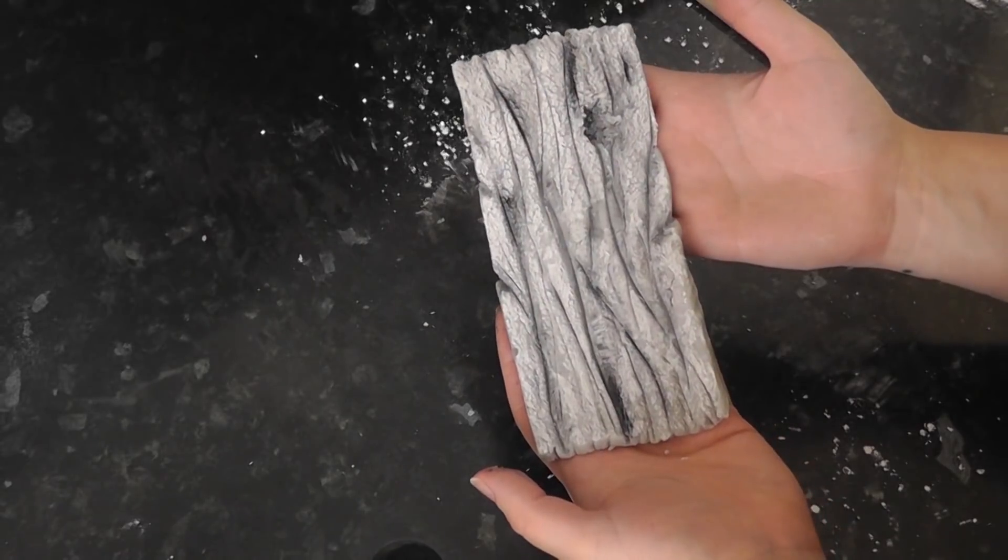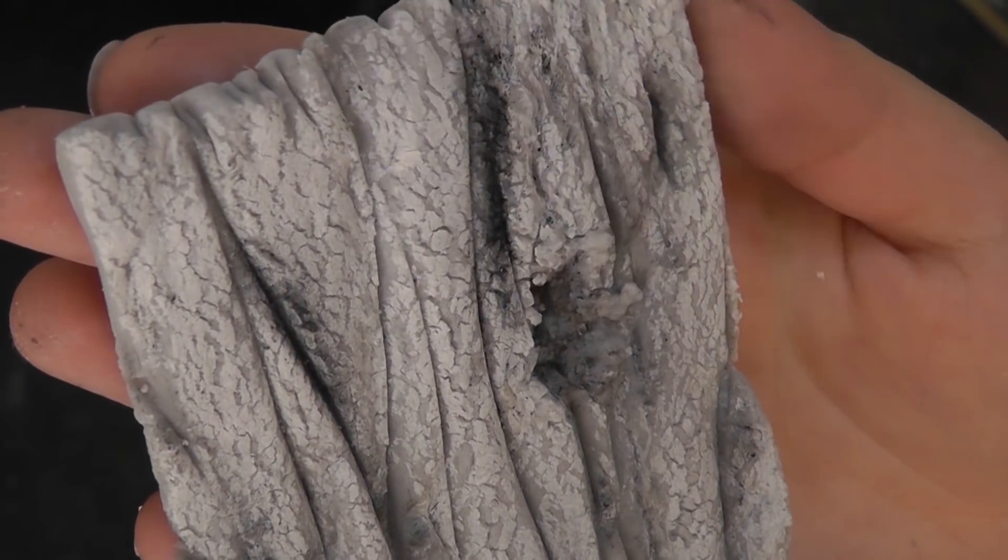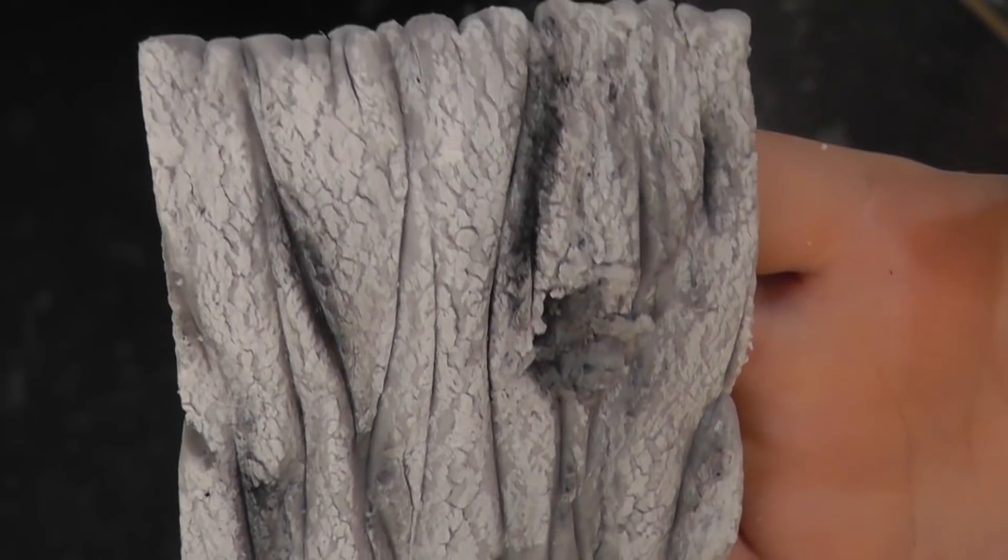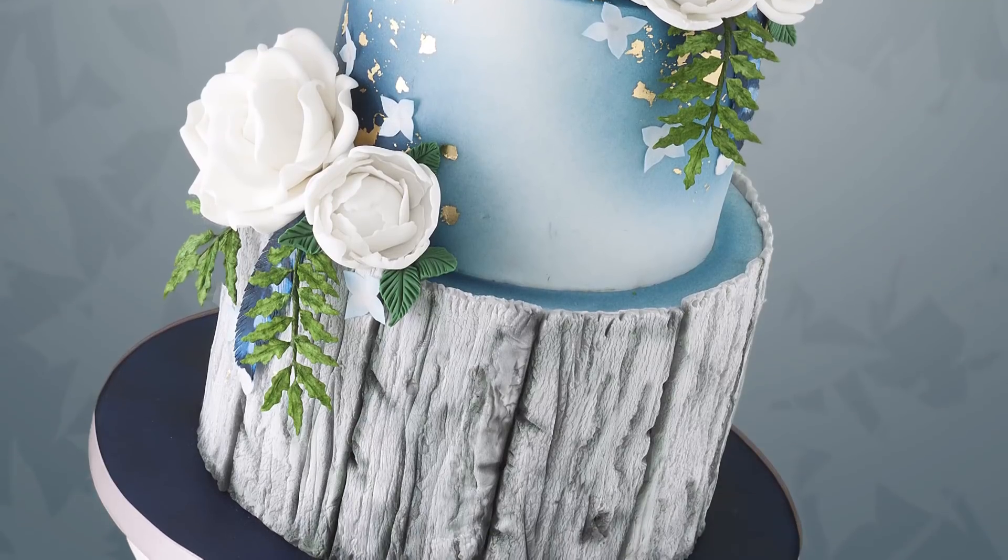All done. Whitewashed rough wood effect. Add the panels to the side of the cake with water.